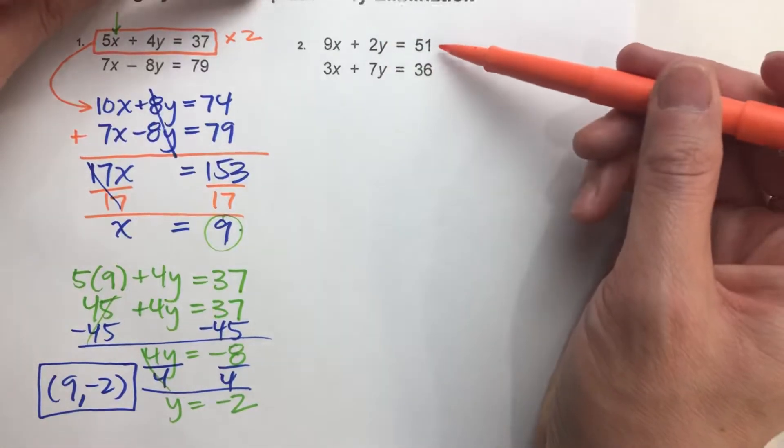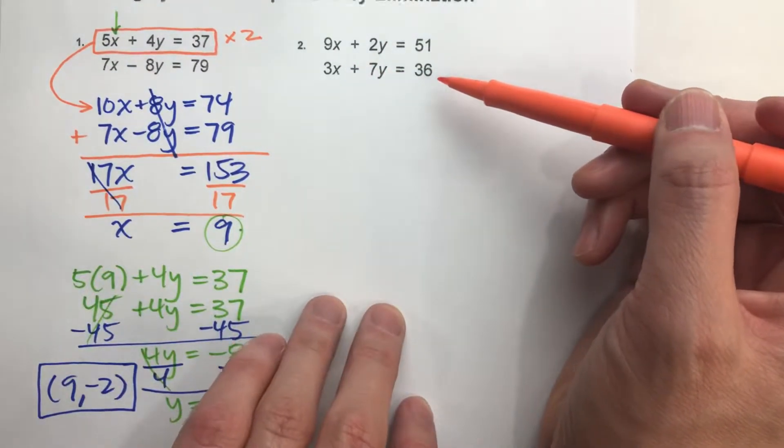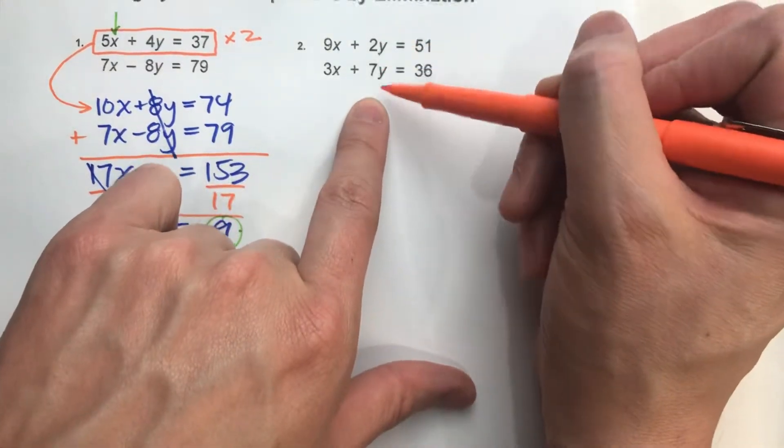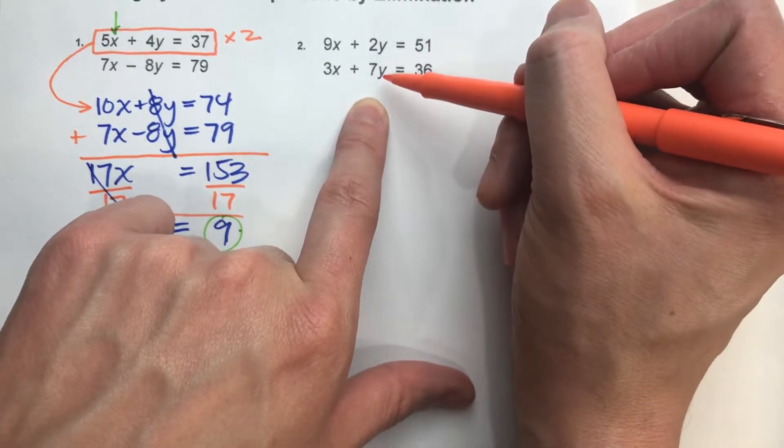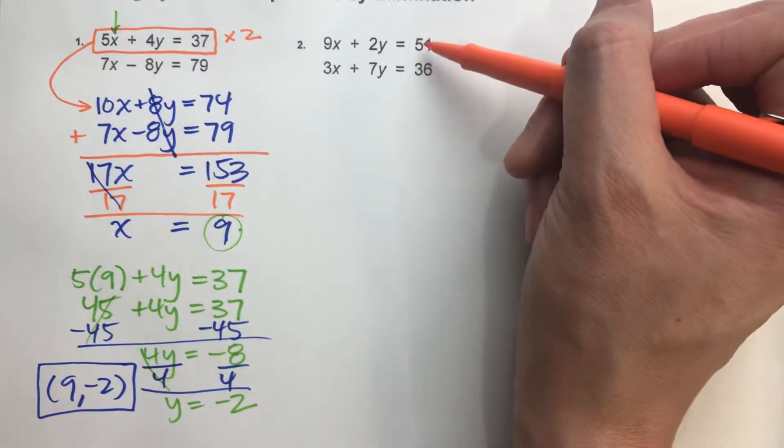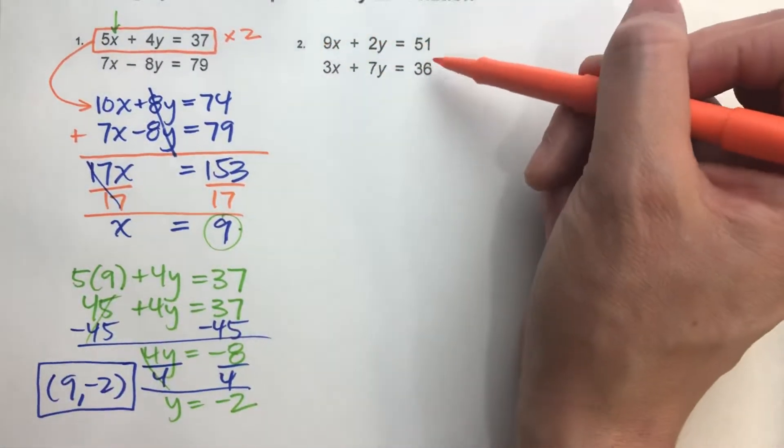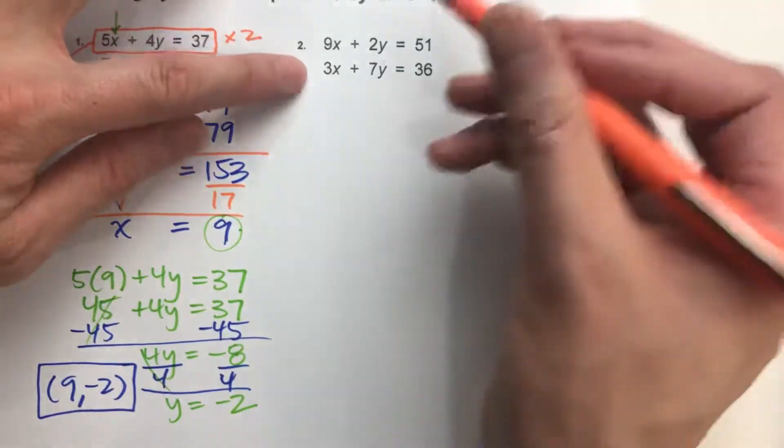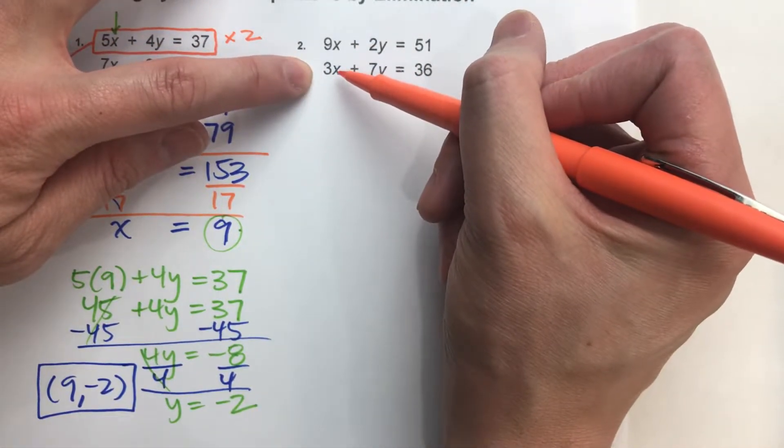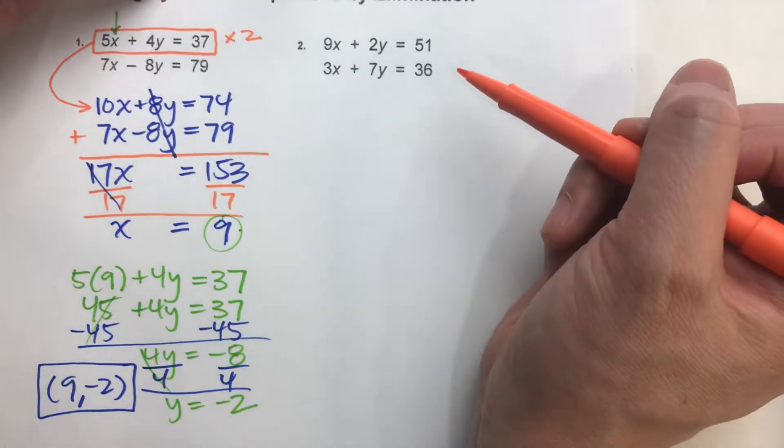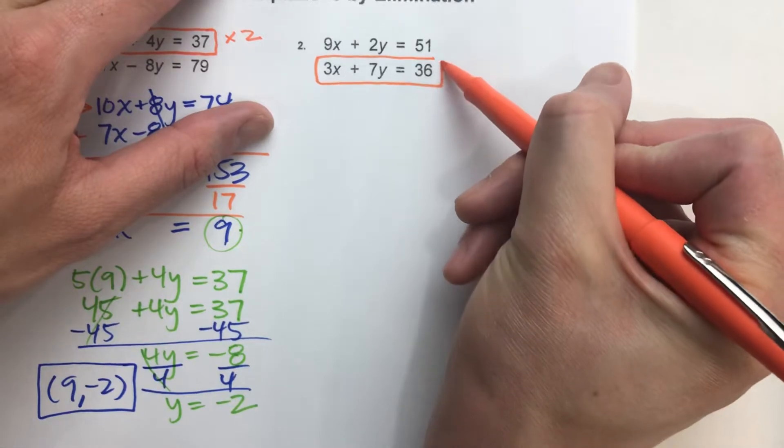I've got 9x plus 2y equals 51. I've got 3x plus 7y equals 36. Now right away, I noticed the 2s and the y's aren't going to eliminate very easily. Because 2 times something to get 7, I mean, I could multiply by 3.5 to get 7. But who wants to multiply a bunch of numbers by 0.5? If I look at my x's, I know I can multiply 3 by a number to get 9. So that's going to be an easier choice. So I'm going to multiply this equation.